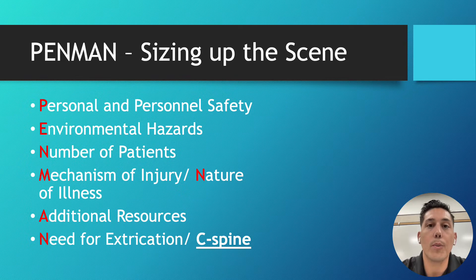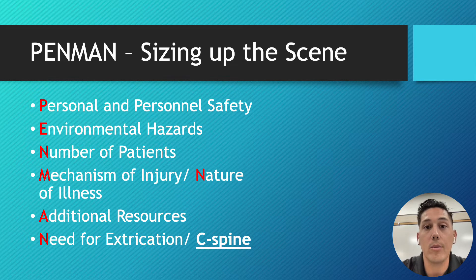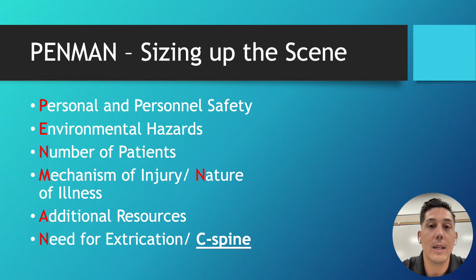For personal and personnel safety, that's to make sure that we are safe to go into the scene. We have all of our protective equipment — we have gloves, gowns, masks, eye protection — our apparatus is in a safe location where we're not going to be hit or harmed by anything, and we're safe to enter.